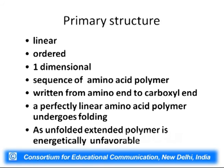From the primary structure we know that it is a linear, ordered, one-dimensional sequence written from the amino terminal end to the carboxylic end. If you reverse the direction it becomes an entirely different sequence. An unfolded, extended polymer is energetically unfavorable compared to having free amino acids, so we will study what energetic compensation occurs in polypeptide formation.